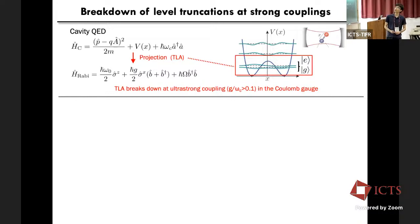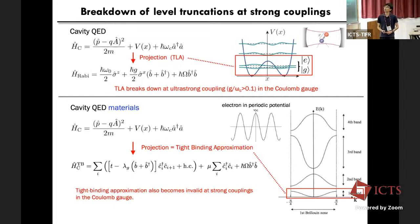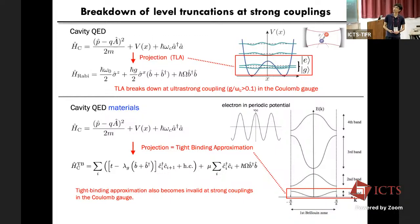In the Rabi model, this type of two-level approximation — projection onto the low-energy manifold — breaks down with coupling. Consider the simplest example in cavity QED materials: a single electron in a periodic potential coupled to a single cavity mode. The common simplification is to perform the tight-binding approximation, projecting to the lowest energy manifold. As expected from the quantum Rabi model experience, this low-energy projection also breaks down with strong coupling in the Coulomb gauge, so we need some alternative approach to construct the tight-binding model.